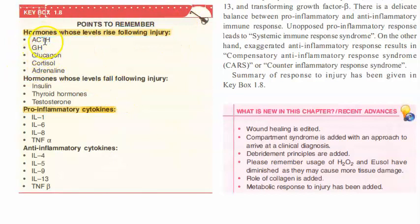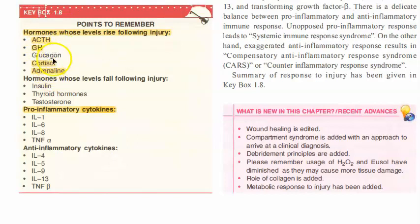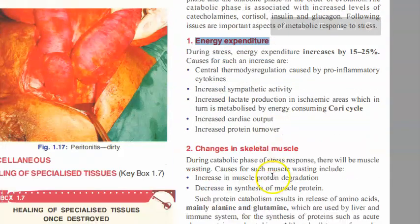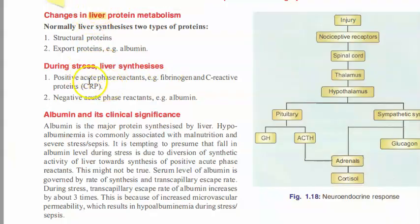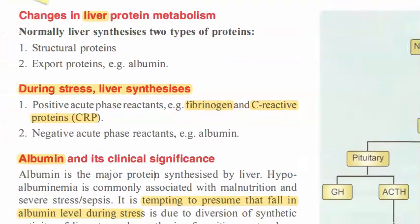To remember: adrenaline, growth hormone, ACTH, cortisol, and glucagon all increase. Glucagon is the opposite of insulin — it increases glucose levels. For the metabolic response to injury, focus on the fact that whenever there is stress, the liver synthesizes fibrinogen and C-reactive protein and suppresses albumin secretion. So fibrinogen and C-reactive protein are secreted more during stress.